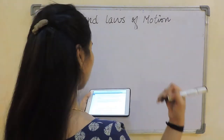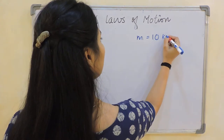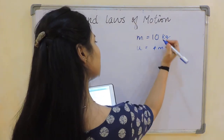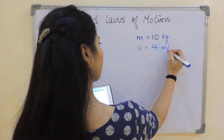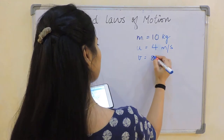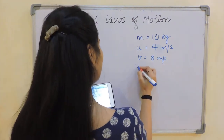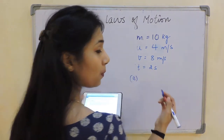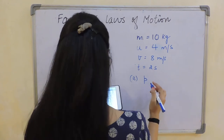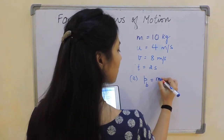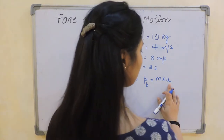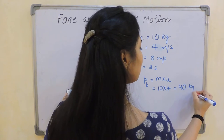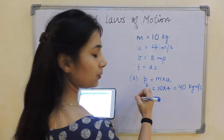Let's solve it. We are given mass is 10 kg, initial velocity U is 4 meter per second, final velocity V is 8 meter per second, and time period T is 2 seconds. For part one, momentum before the force acts: P_before = mass × initial velocity = 10 × 4 = 40 kg·m/s.